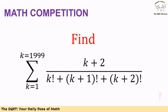Hello everyone. In this video we are going to have another problem that deals with number series. In this problem we have a Sigma where each term can be written as (k+2) over k factorial plus k+1 factorial plus k+2 factorial, for k equal to 1 to 1999. We want to find the value of the whole Sigma.